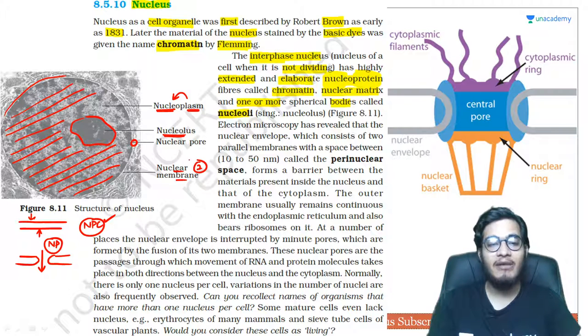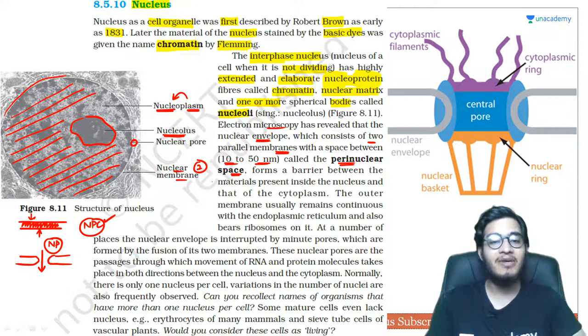When you see with electron microscopy, you'll find that in the nuclear envelope, two parallel membranes are present. And the space between them is 10 to 50 nanometers. This space between them is called perinuclear space, that is, the space outside the nucleus which is present between its membranes.